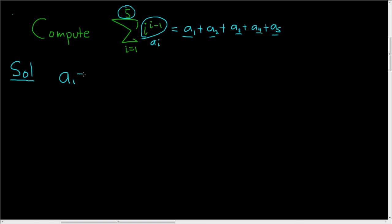So a sub 1 is 1 to the 1 minus 1, so you get 1 to the 0, which is 1. a sub 2 is 2 to the 2 minus 1, so you get 2 to the 1, which is 2. a sub 3 is 3 to the 3 minus 1, so you get 3 squared, which is 9.